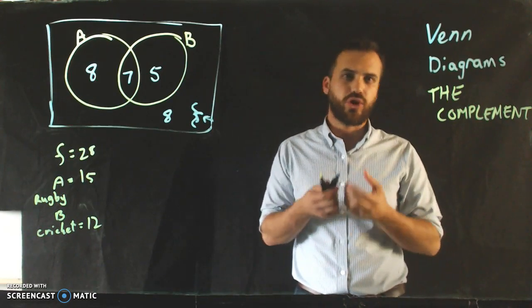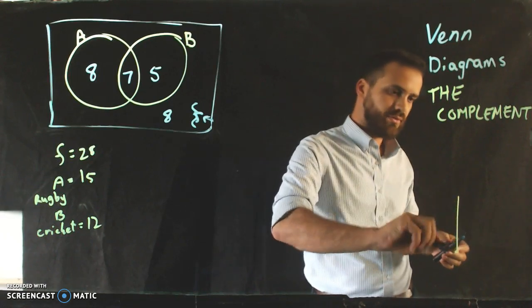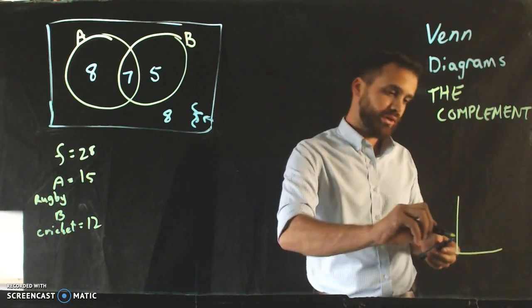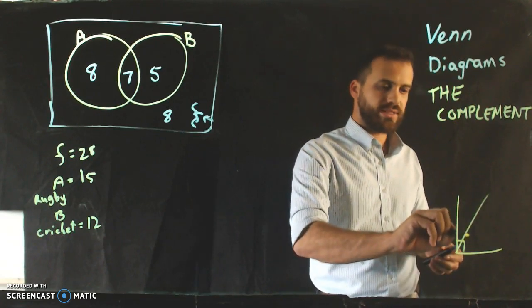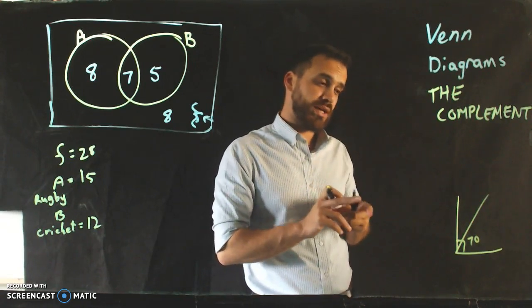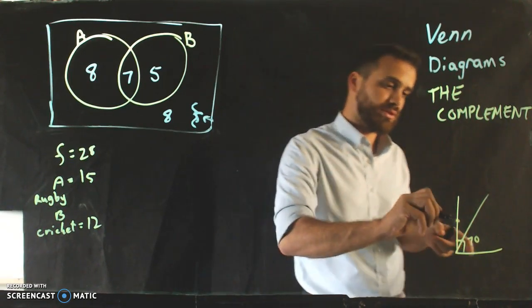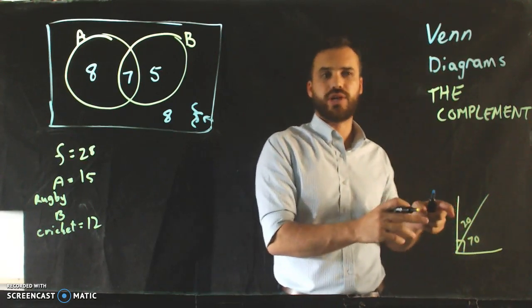You've already seen the idea of a complement before. For instance, in a right angle triangle with a 70 degree angle, you know that the complementary angle is 20 degrees - that is, two angles that add up to 90 together. So they're complementary angles.